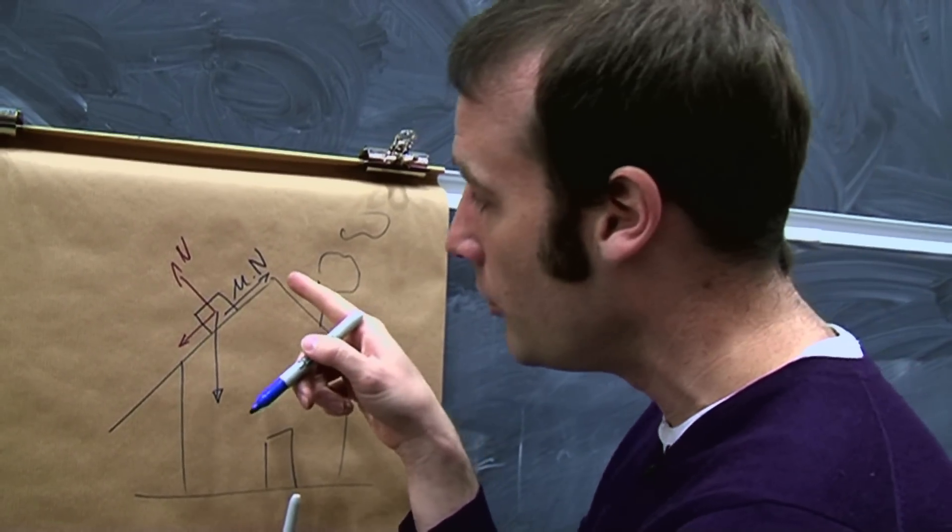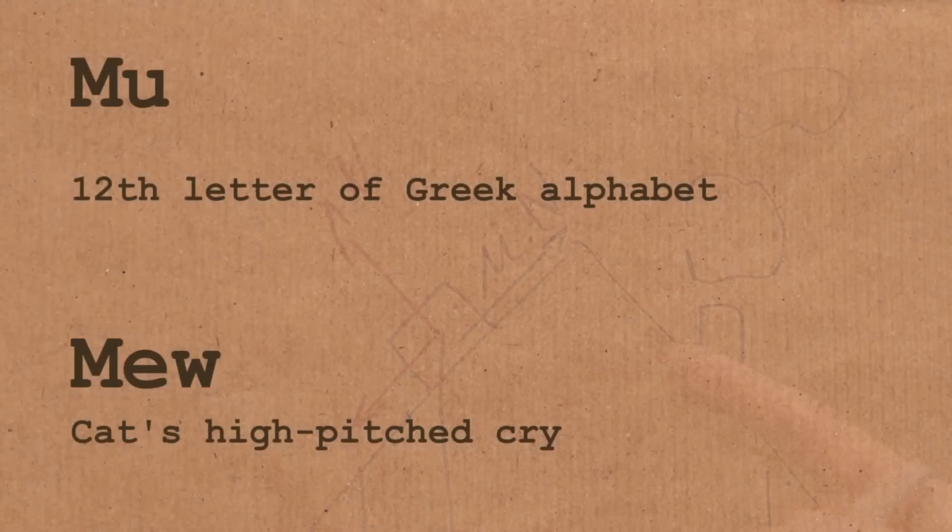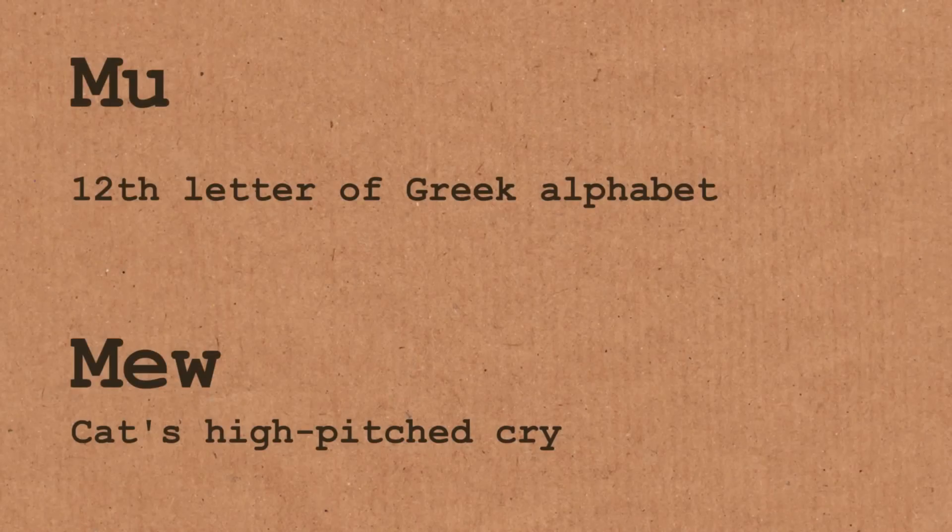And if there were two boxes, the one with the smaller coefficient of friction would fall off first. And that is the Greek letter mu, which, if we're talking about cats, the cats make the sound meow.